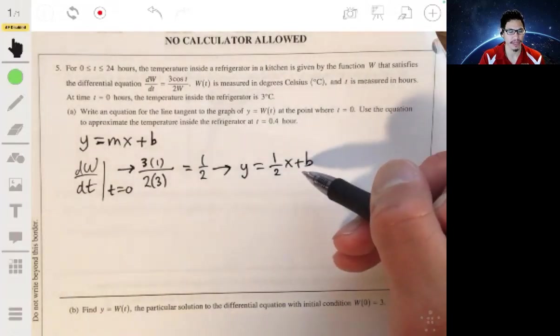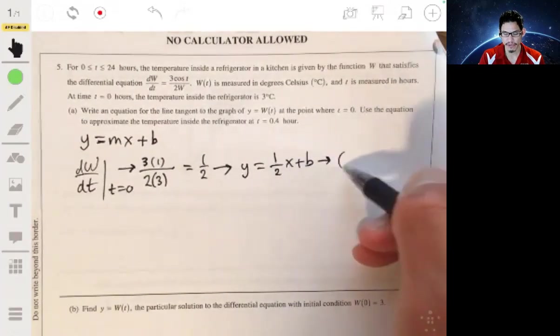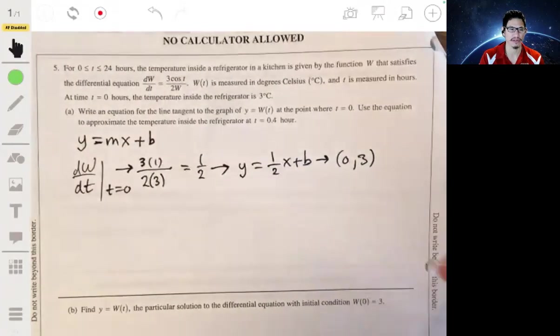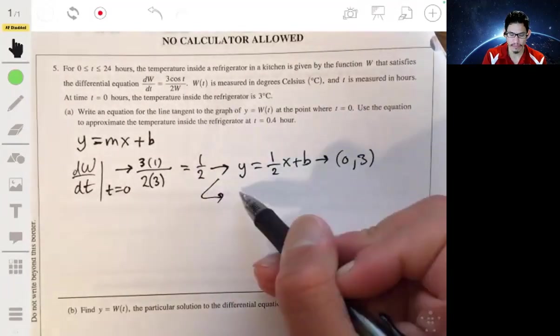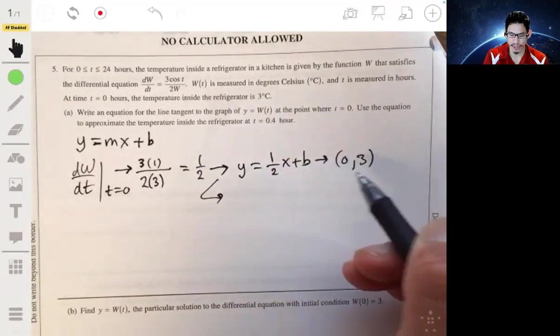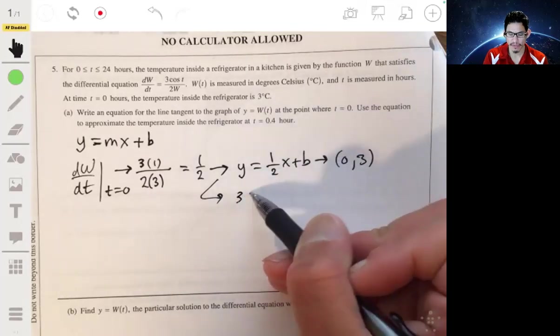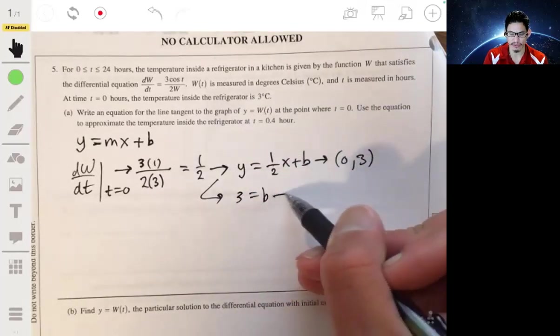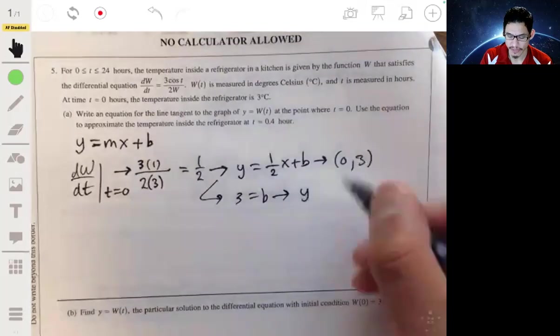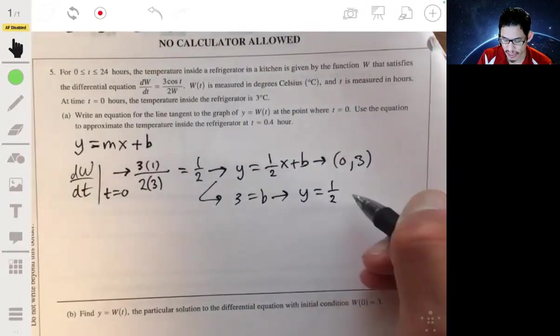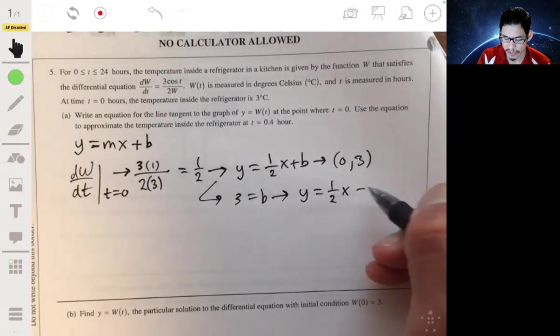So, we just have to find the Y intercept at that point, 0, 3, and we just plug those values in and solve. So, we get 3, 1 half times 0, that goes away, so 3 is our Y intercept B. So, our equation for our tangent line is Y equals 1 half X plus 3.